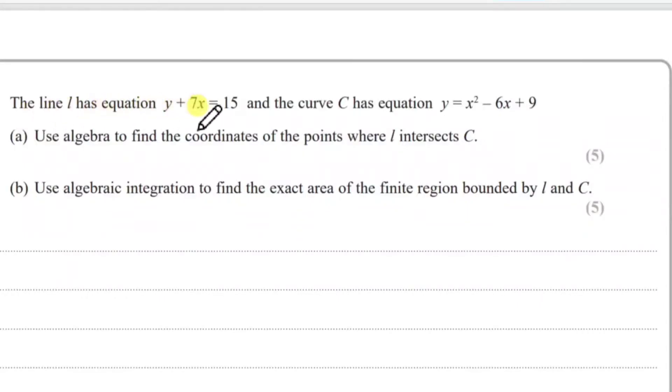The line L has equation y + 7x = 15, and the curve C has equation y = x² - 6x + 9. Before I do anything, I'd like to rewrite this in terms of y = mx + c because it just looks better. So let's make y the subject. You get y = -7x + 15.